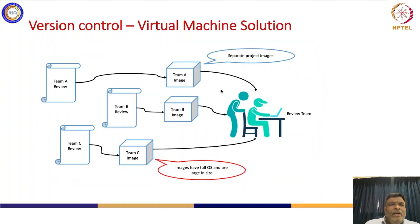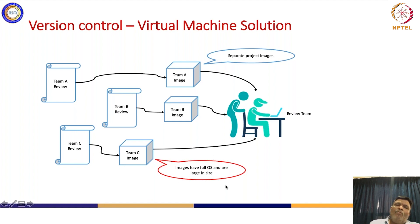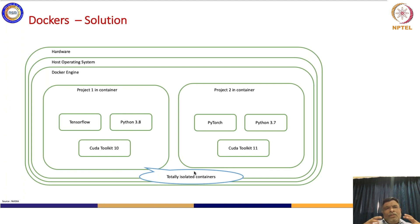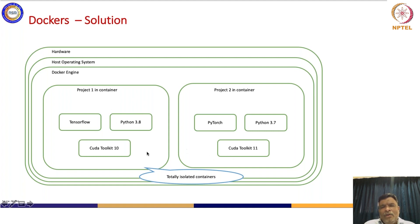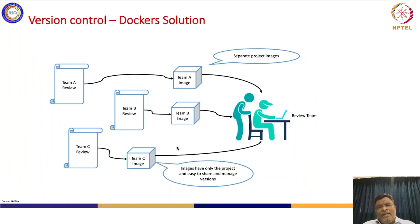In the VM case, Team A and Team B each have a separate project image, so the review team is happier, but these images have a full OS and are large in size — that is the disadvantage. Now with Docker, the solution looks like this: you have the hardware, the host operating system, a Docker engine, and Project One in a container and Project Two in another container, each having its own framework ready. These are totally isolated containers, so the images are easy to share and manage with separate project images.